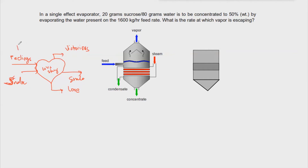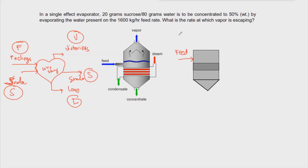If you take all the first letters of this balance — F, V, L, and S — notice that in evaporators: F is the Feed (feelings in the story), V is the Vapor (victory), L is the Liquor (love), and S is the Steam (the snake). The snake enters and must leave as a snake — it should not interfere with the love story. That's our mnemonic for the FLVS balance.